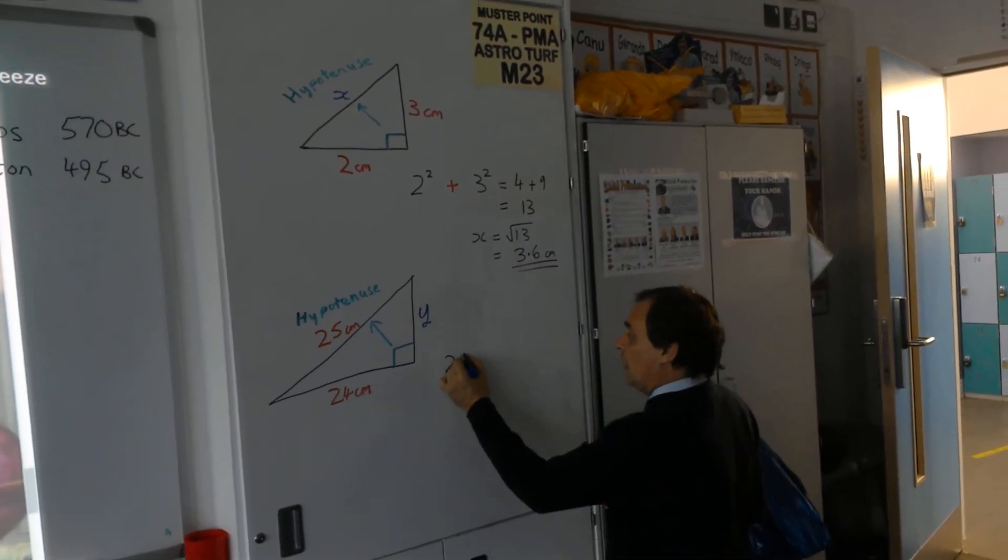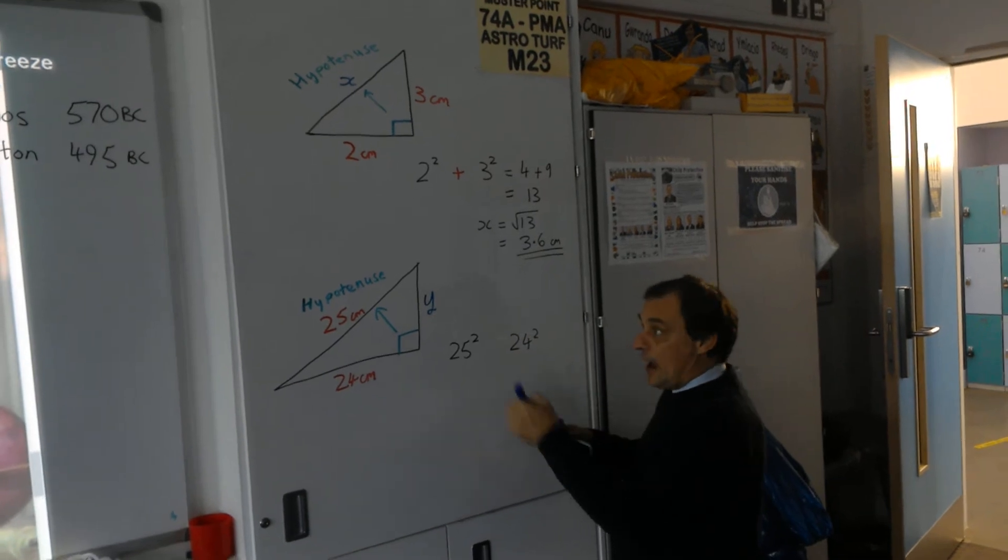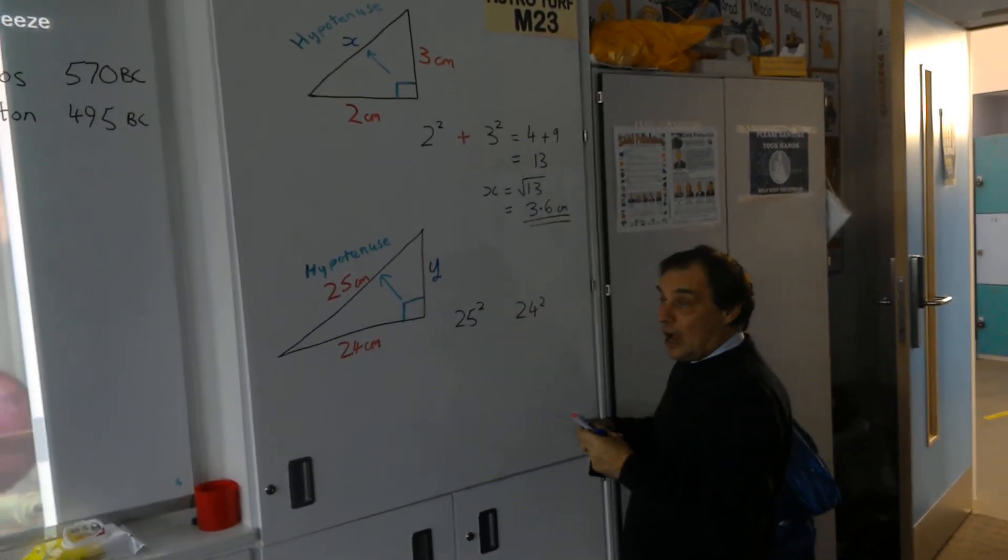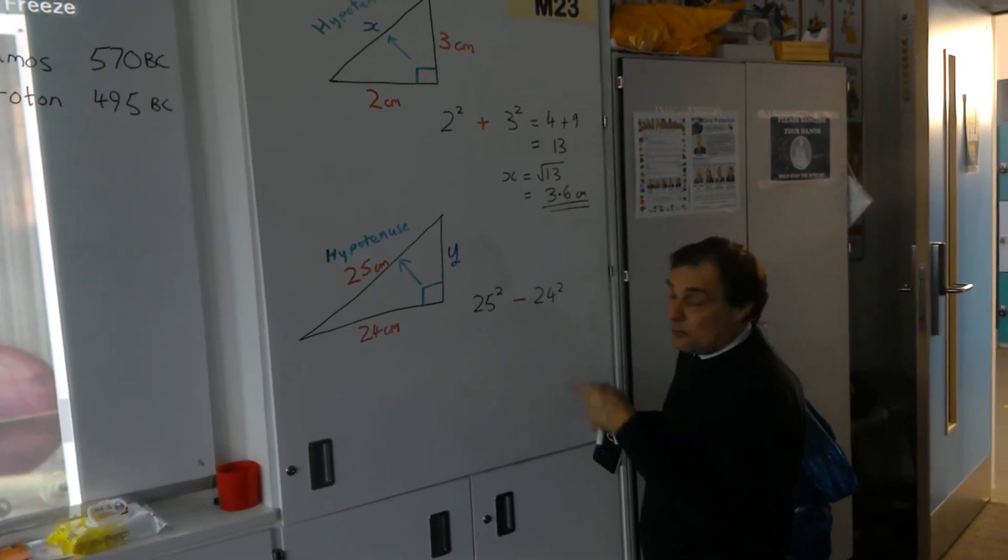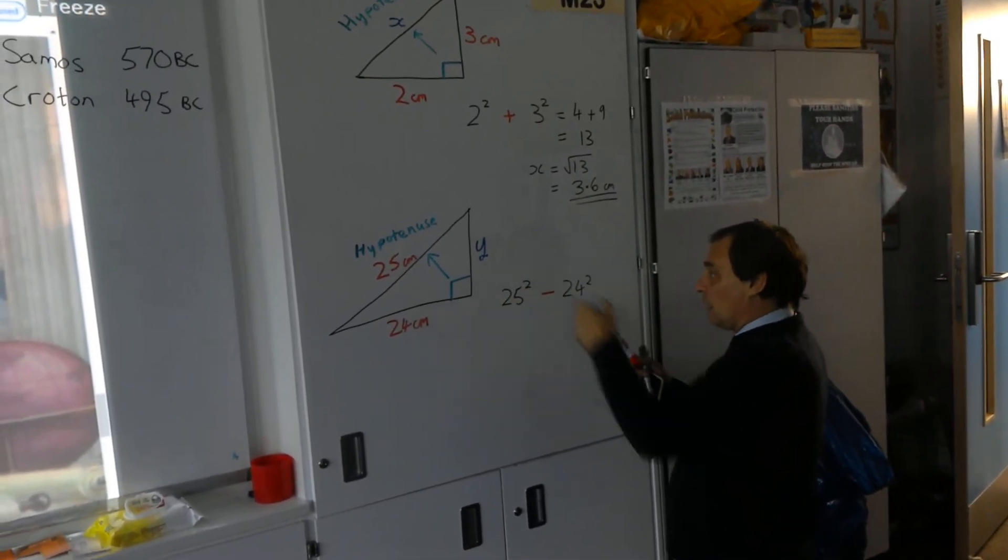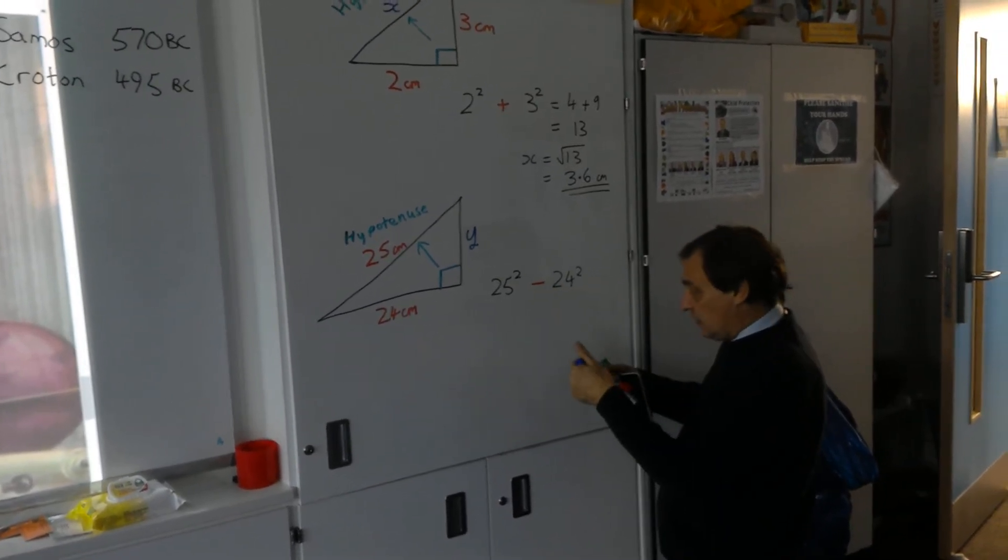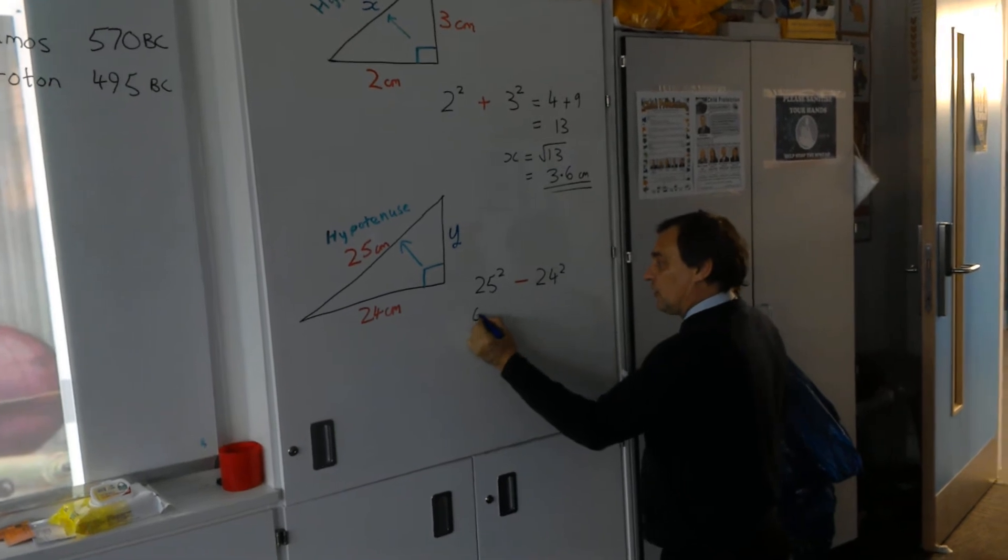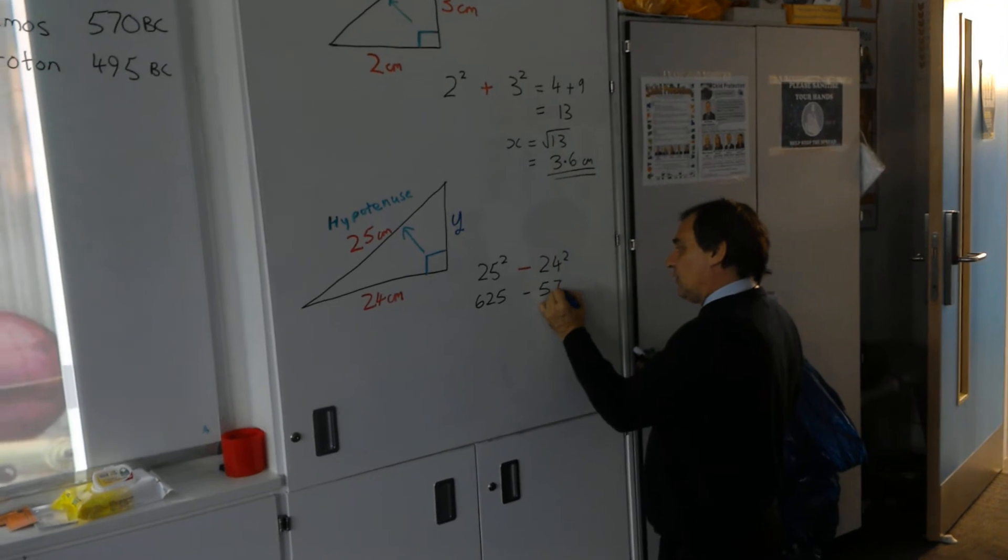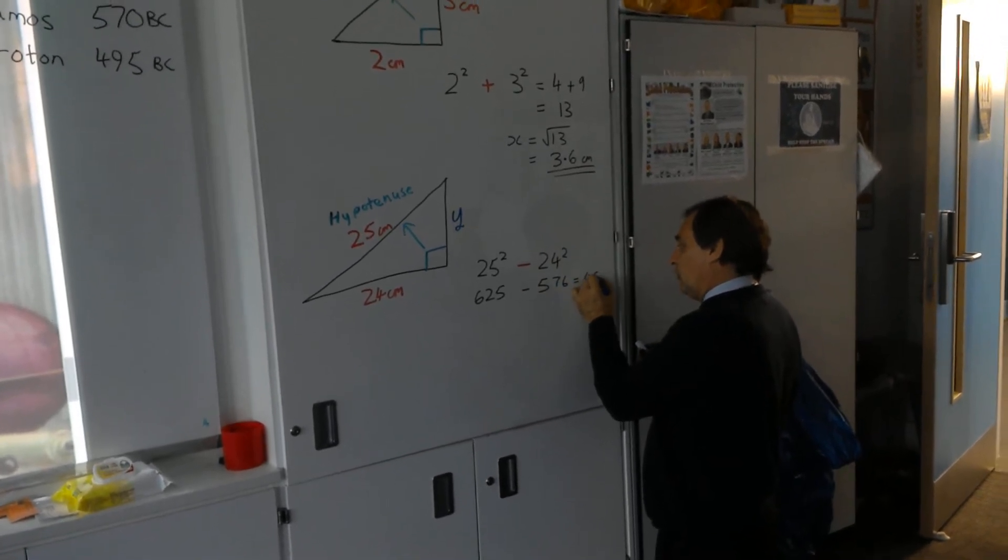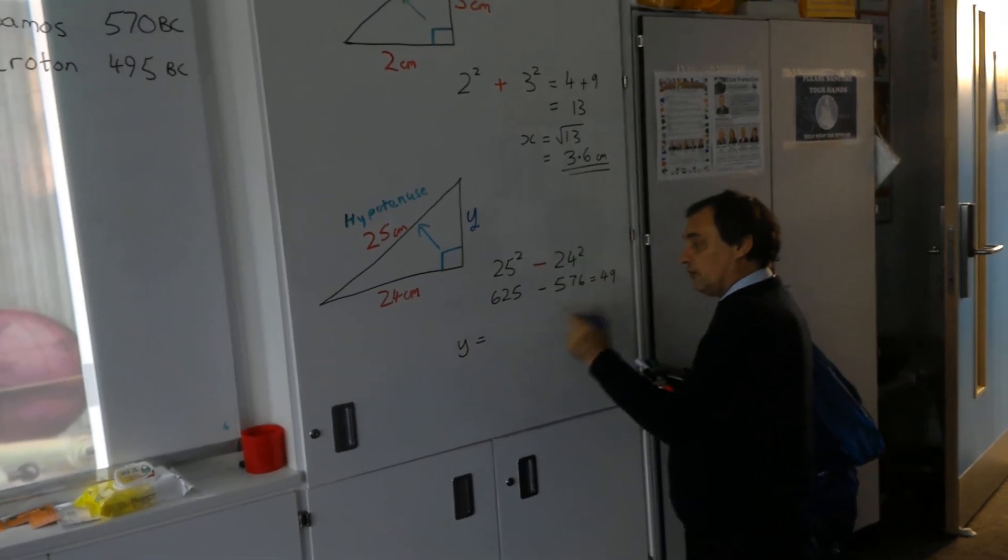So I've got my 25 squared, and I've got my 24 squared here. But this time, as I've already got the longest side, I'm going to take away my 24 squared from the square of my longest side of my hypotenuse. So that's where I'm going to be using the takeaway method. So that's 625 take away 576, gives us an answer of 49.